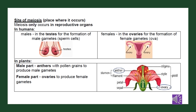Meiosis only occurs in reproductive organs. Mitosis is the division of somatic cells, forming new cells with the same chromosome number during growth, repair of damaged tissues and asexual reproduction. Meiosis takes place during the formation of sex cells. In human males, meiosis occurs in the testes through spermatogenesis to form haploid sperm cells. In human females, meiosis takes place in the ovaries through oogenesis to form haploid egg cells. In plants, meiosis occurs in the anther of the male reproductive organ and the ovary of the female reproductive system.